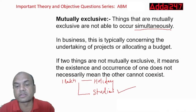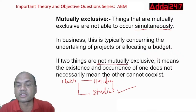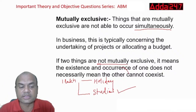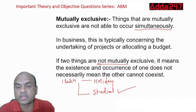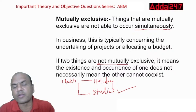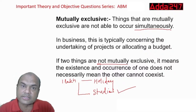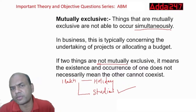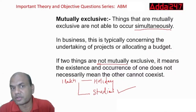If two things are not mutually exclusive, they can occur simultaneously — the existence and occurrence of one does not necessarily mean the other cannot coexist. For example, scoring a first class and passing are not mutually exclusive, because you can pass as well as score in the first class. But passing and failing are mutually exclusive.